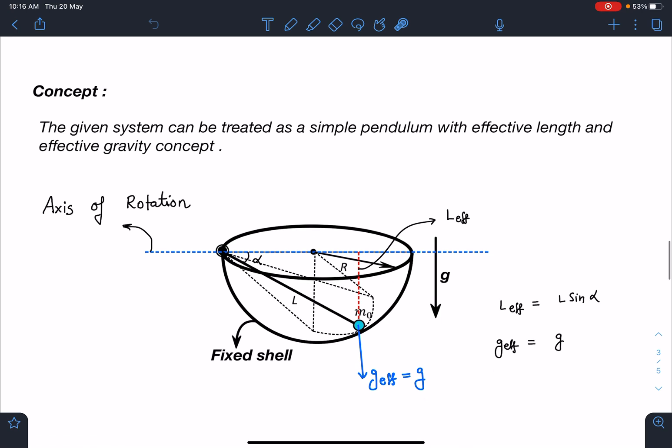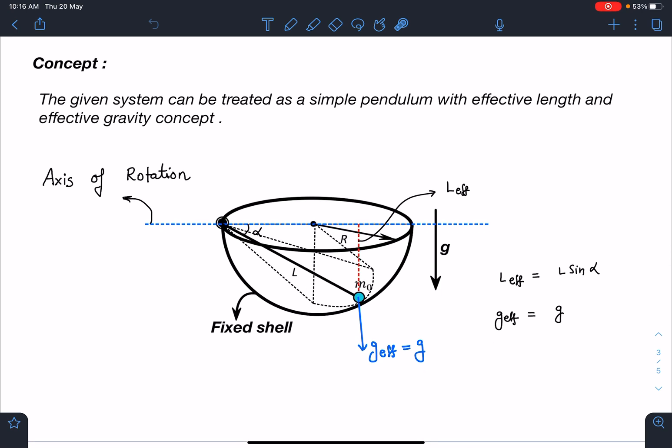The given system can be treated as a simple pendulum with effective length and effective gravity concept. When I displace this particle slightly, it is going to oscillate like this along the tangent to the spherical shell. If you see this plane, this will be one horizontal plane and a slightly tilted one. You can either treat oscillations about this axis, but if you join these two points, we are going to get the axis of rotation about which this pendulum is going to oscillate.